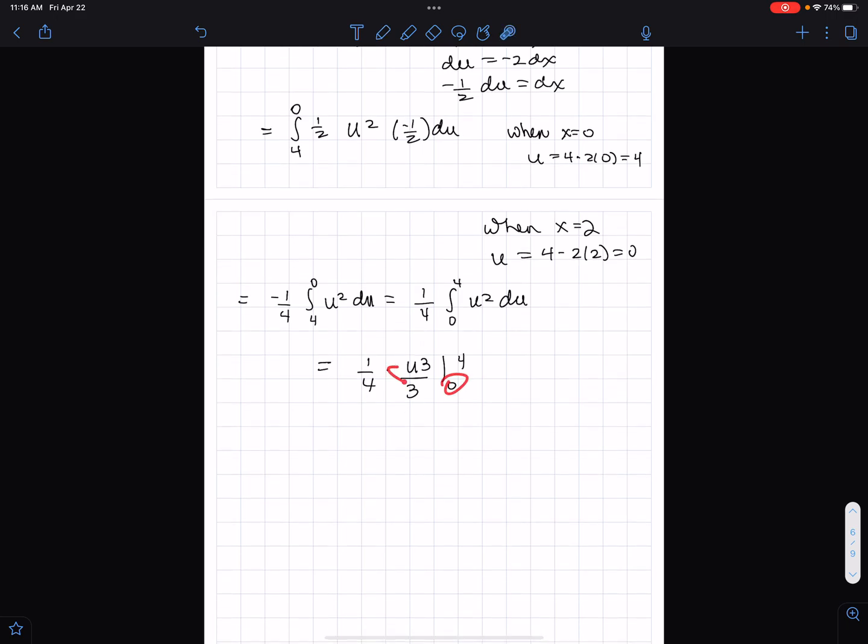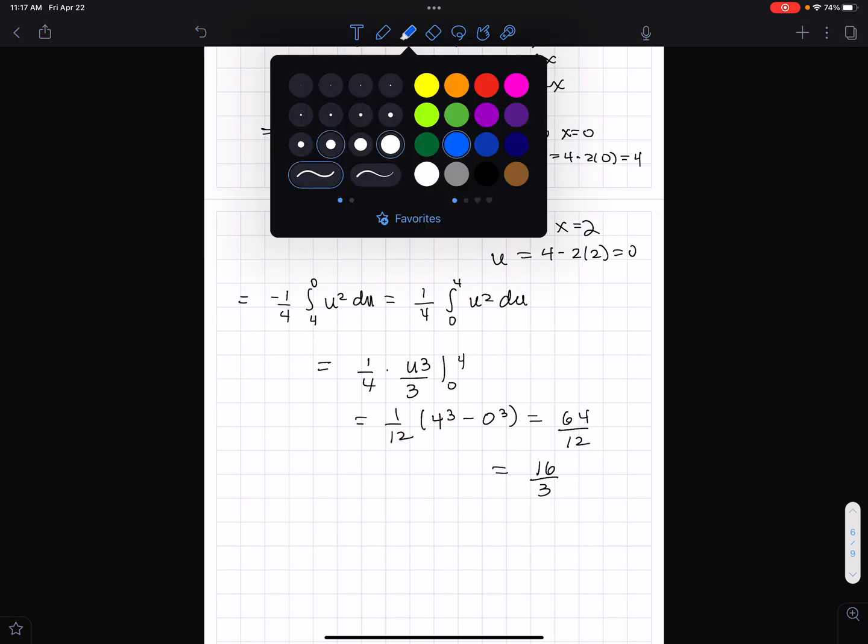If I put in 0, this is going to be just 0. So I have 1 twelfth. Well, I'll just write it down. 4 to the third minus 0 to the third. 4 to the third is 64, and I divide by 12. But if I divide 64 by 4, I get 16 over 3. I mean, I could have simplified the 4 and the 12 and get 4 squared divided by 3. But anyway, so that's the answer.